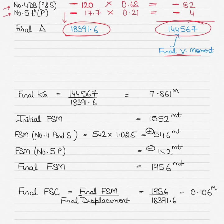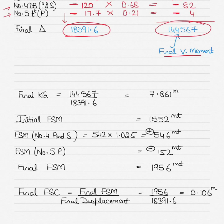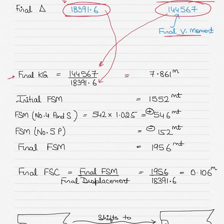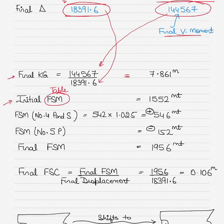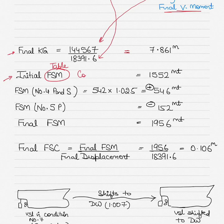To get my final KG, I divide the final vertical moment by the final displacement, and I get my final KG of 7.861 meters. Now the initial free surface moment from the table — from the same row as the initial displacement and initial KG — was 1552 metric ton-meters for condition number 7.